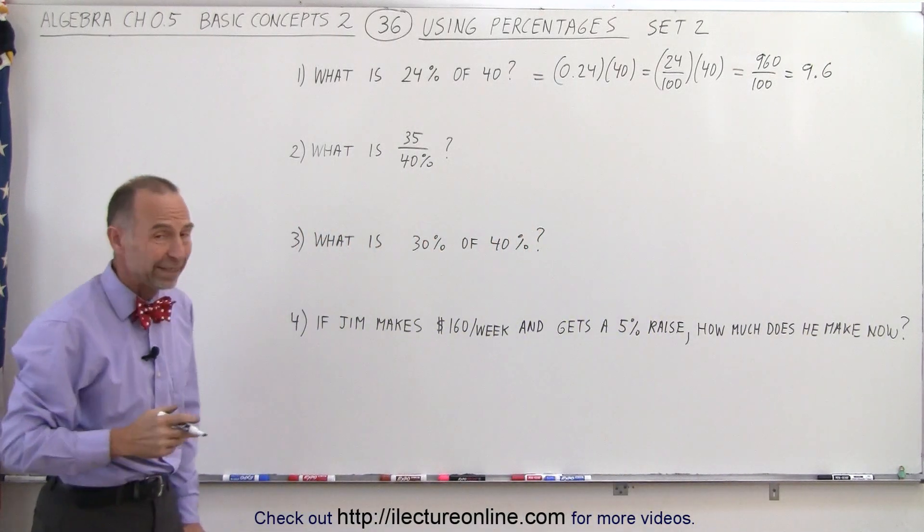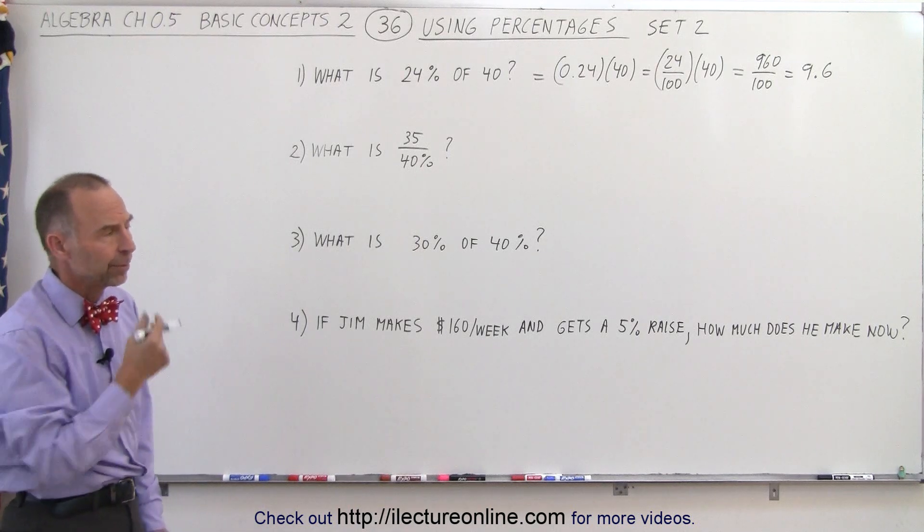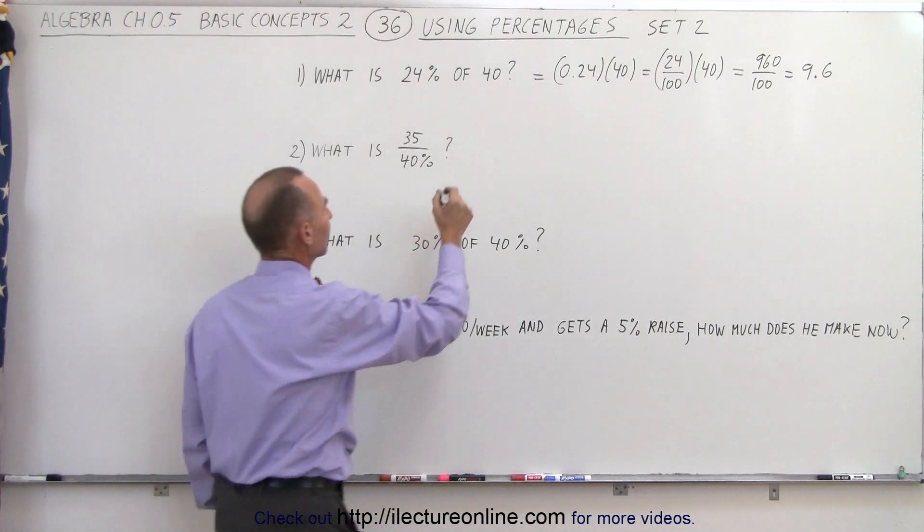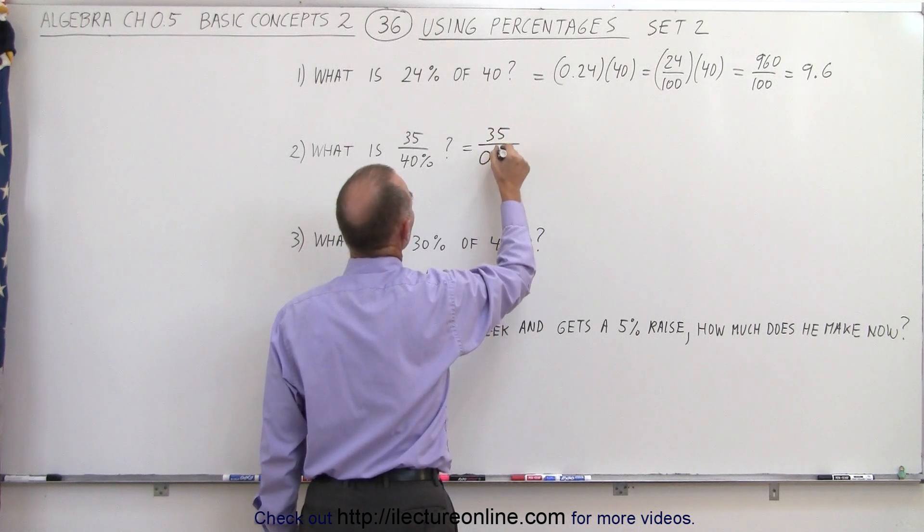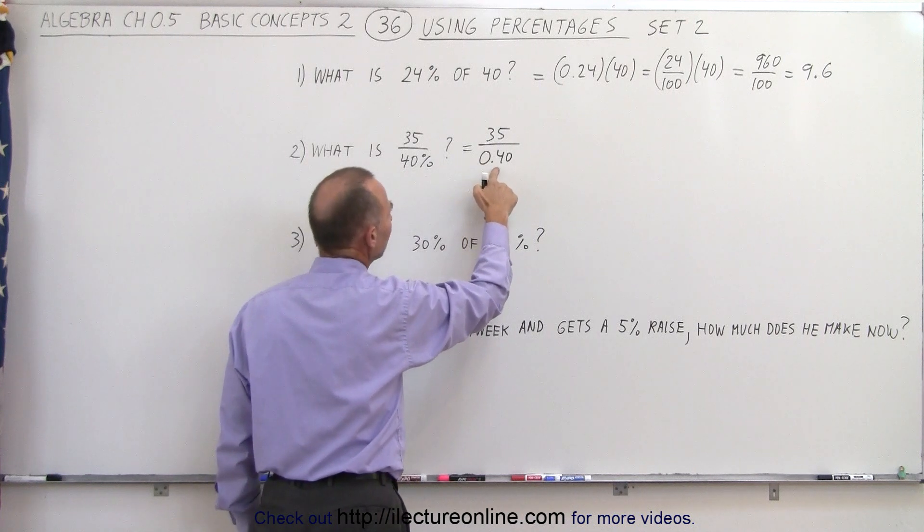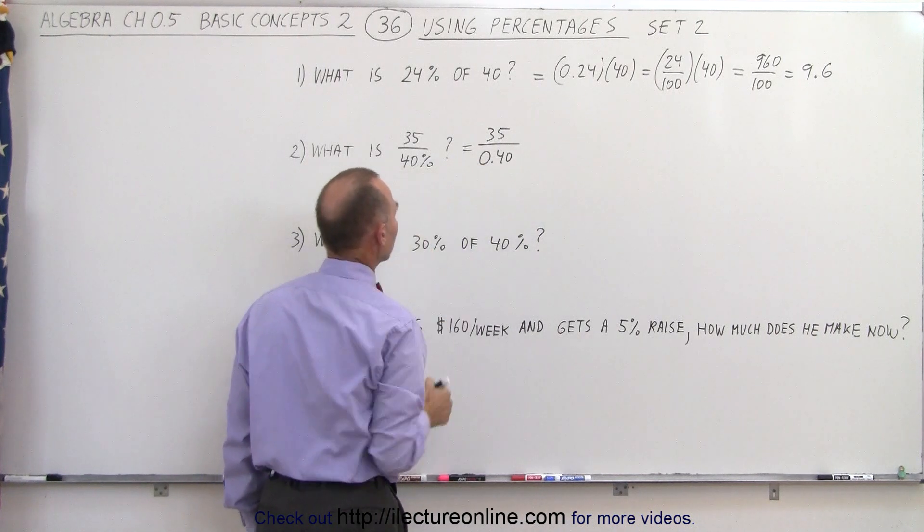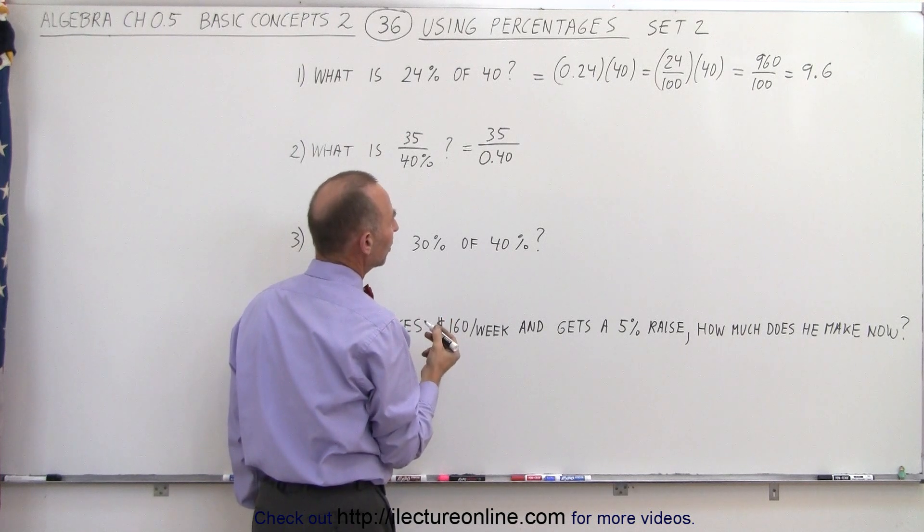Our next example, we're taking the number 35 and dividing it by 40%. Well, that means we can say that this is equal to 35 divided by 0.40, because when we convert from percent to a decimal, we need two decimal places and then have the number to be equal to that. Divide by 0.4.